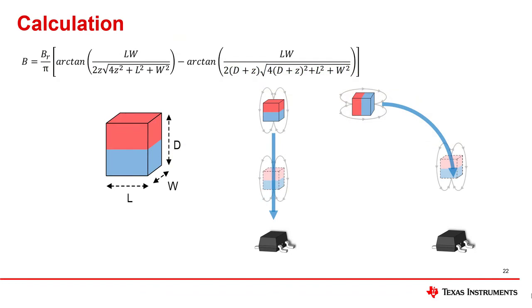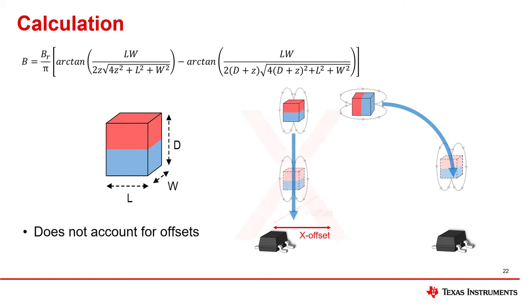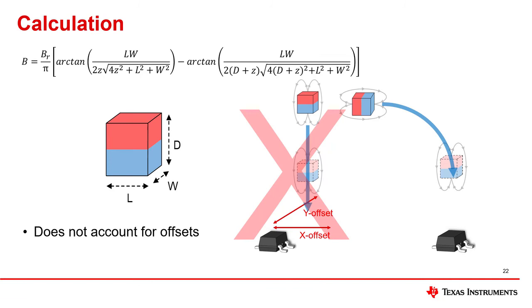There is yet one other aspect that may appear to be a challenge to the uninitiated, which would be calculating the expected magnetic flux. Some of you may have already found equations for calculating the magnetic flux relative to your chosen magnet, such as this block equation shown here. And you might have also found that such equations do not account for offsets, such as the X and Y offset displayed in this head-on example.